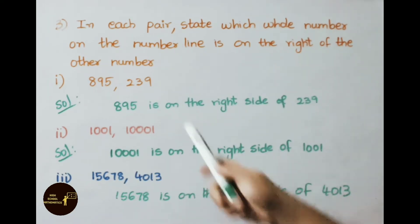See now first sum: 895, 239. Which number will be on the right side? 895 is on the right side of 239.